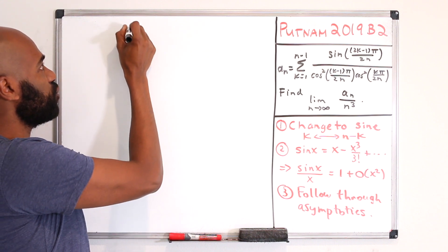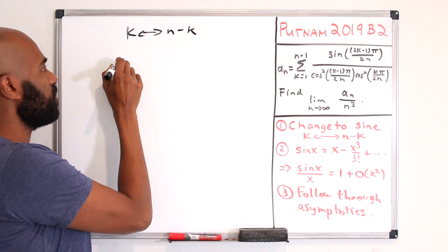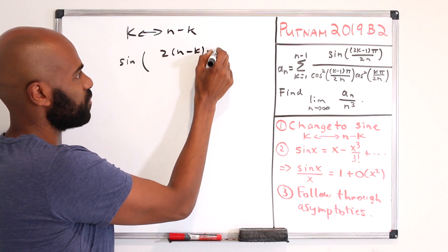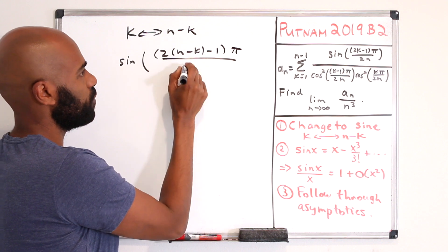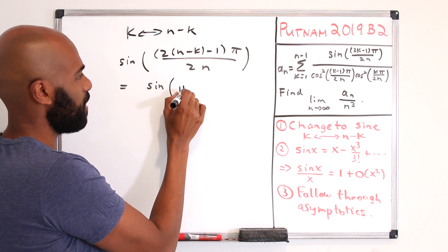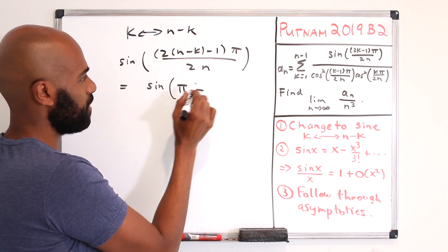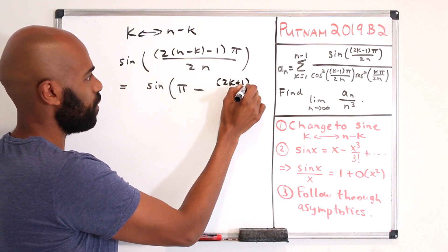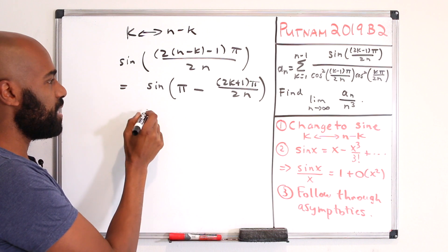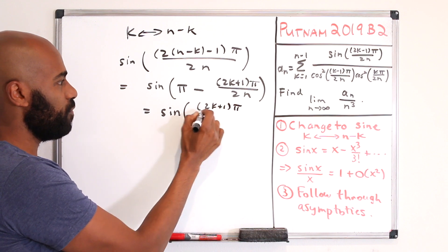Let's address the interchange of k and n minus k and see what happens to each value. The sine term changes to sine of 2(n minus k minus 1)π over 2n, which equals sine of π minus (2k plus 1)π over 2n. Since sine of π minus an angle equals sine of that angle, this becomes sine of (2k plus 1)π over 2n.